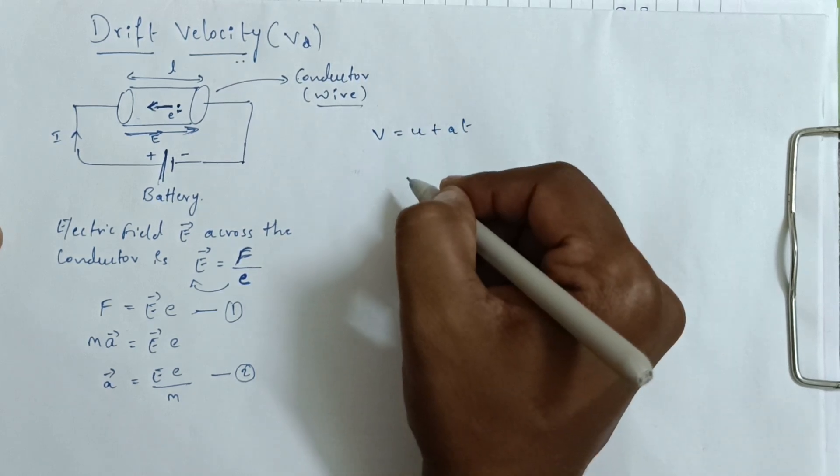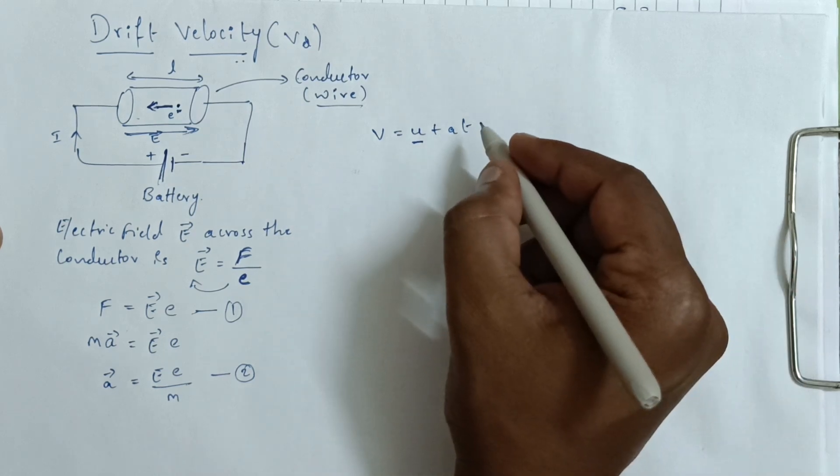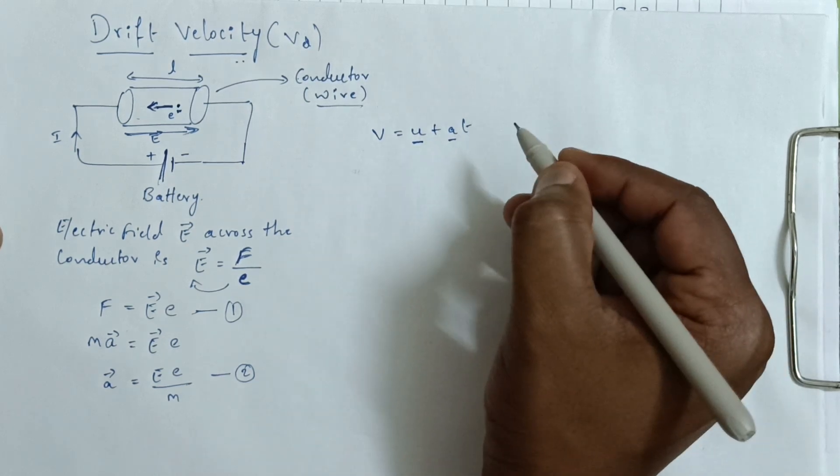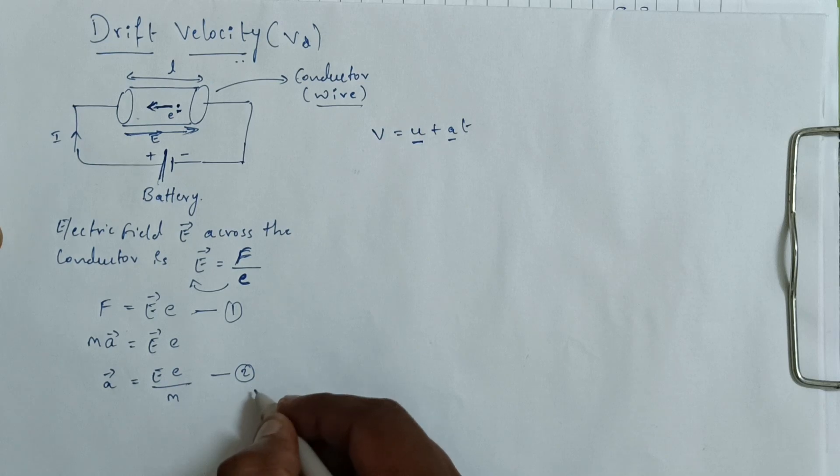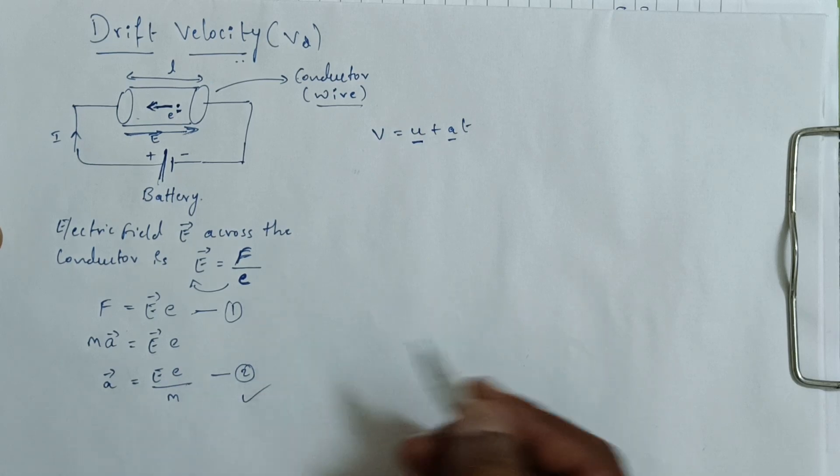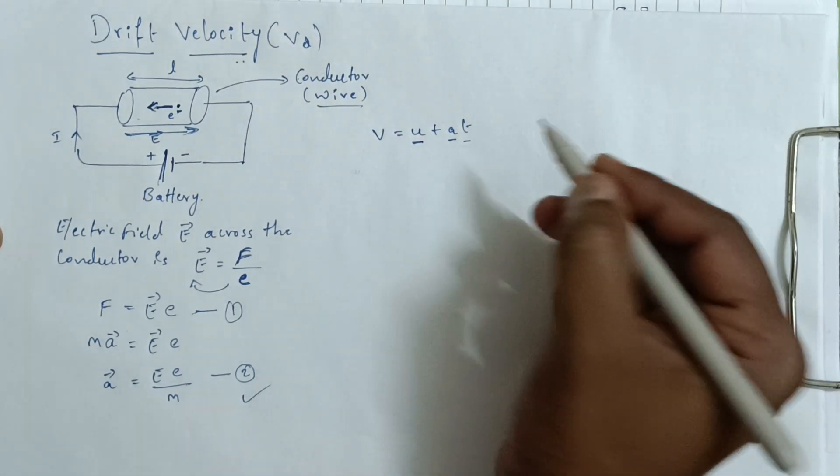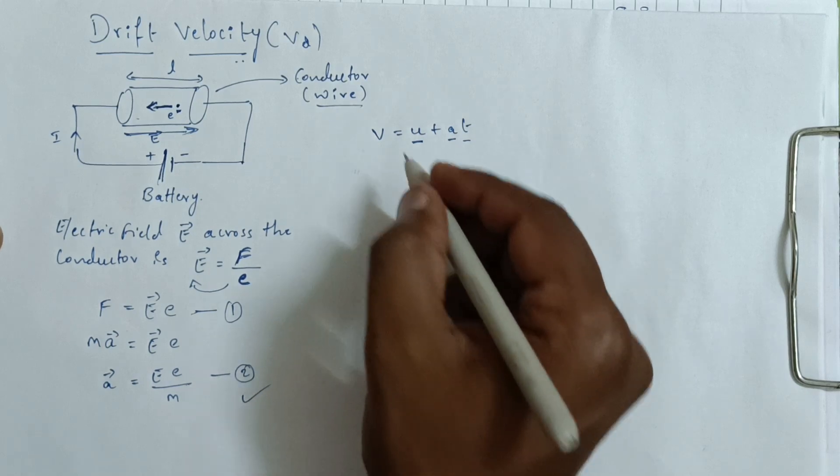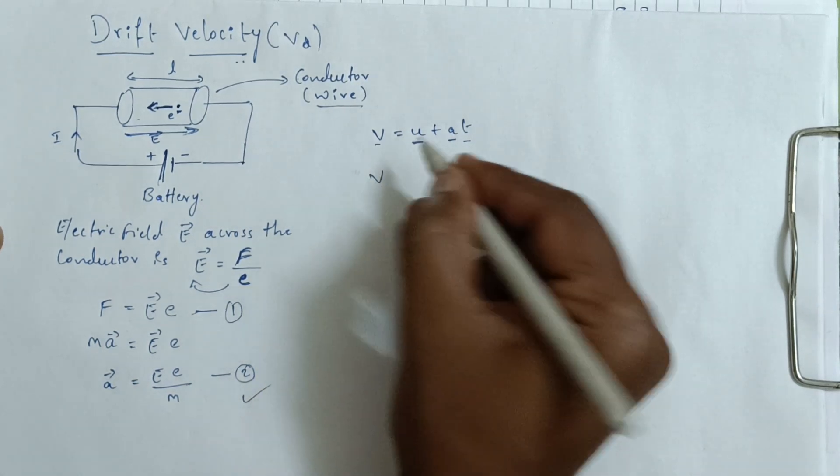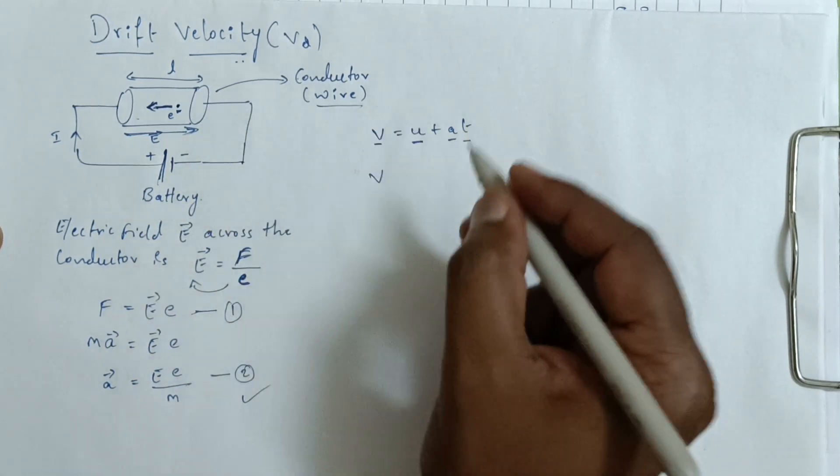U means initial velocity of the electron which is zero. A means acceleration of the electron which we derived in equation 2. T means relaxation time. V means final velocity, that is your drift velocity.